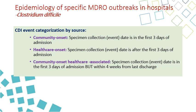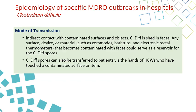According to the timing of onset, cases can be categorized as community onset — diagnosed within the first three days of admission — or healthcare onset, from the fourth day onward. A third category is community onset healthcare-associated, when the patient tests positive within the first three days but was hospitalized in the last four weeks. Transmission can be indirect through contaminated surfaces or direct through contaminated hands of healthcare workers.